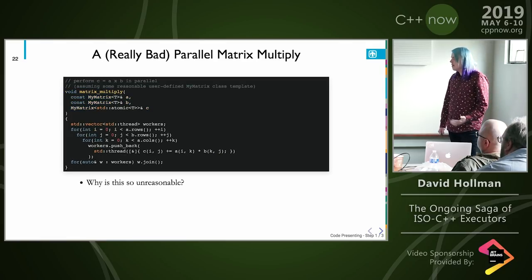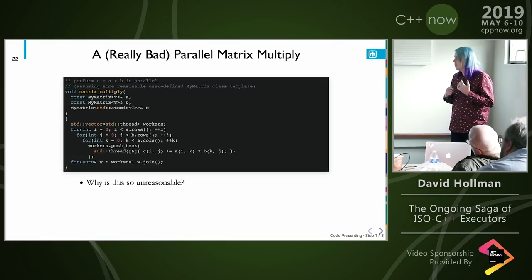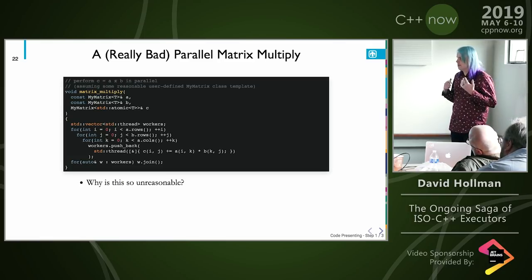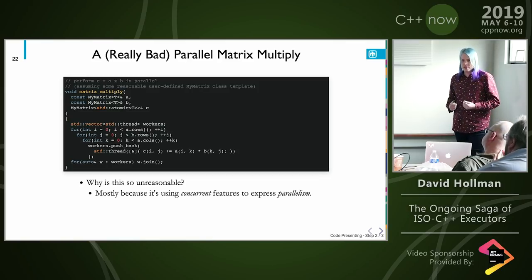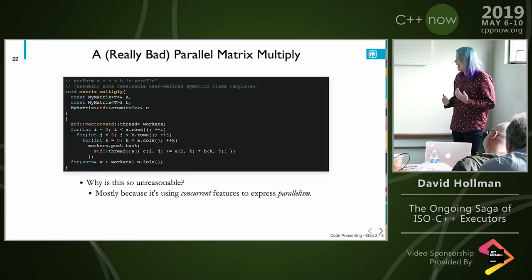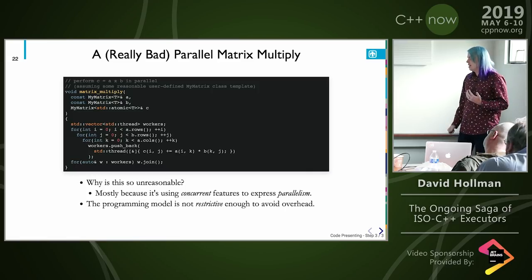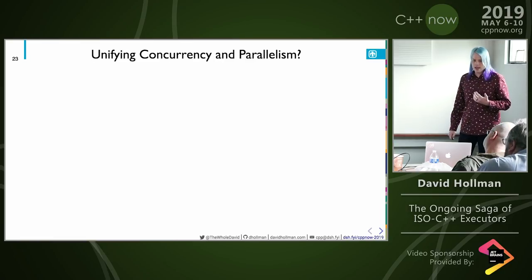The reason why this is so unreasonable and why we all laugh at it is because we're using concurrent features to express parallelism, and there's a lot of overhead and unnecessary semantics being added to this program. Another way to say that: the programming model being used here is not restrictive enough to avoid overhead.